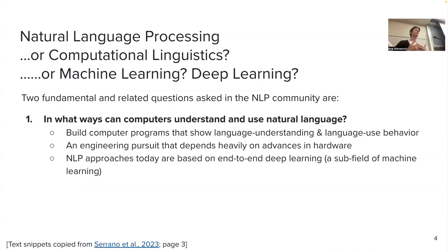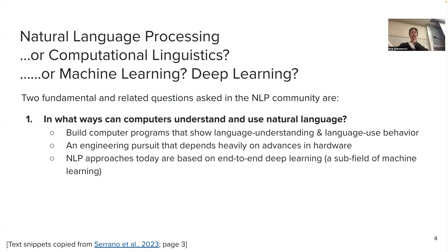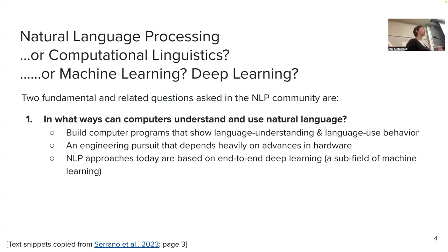We started with what is NLP. NLP is also sometimes referred to as computational linguistics, or sometimes people say it is just applied machine learning or deep learning. There are two fundamental questions of NLP. The first: in what ways can computers understand and use natural language? This has been addressed by building computer programs that show language understanding and language-use behavior. It is an engineering pursuit that heavily depends on advances in hardware. NLP approaches today are end-to-end deep learning models. Deep learning is a field of algorithms around neural networks that is part of machine learning. We focused on building models that can do certain applications, and those applications, if the model can do them, exhibit some level of language understanding — for example, building a machine translation system.